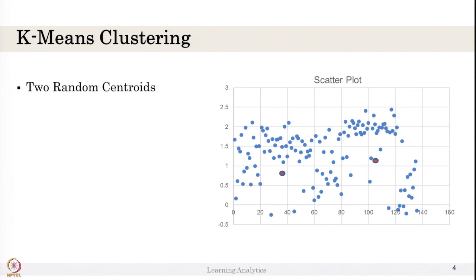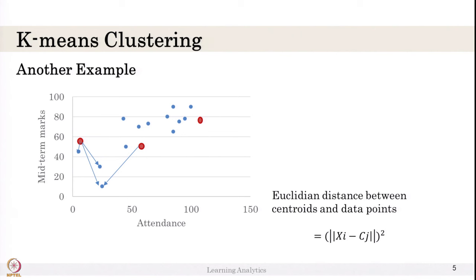Let us see what this distance is and how it is calculated. Consider this data — we have seen this data in previous classes. We have students' attendance and students' midterm marks. We do not know what the end-term mark is. We plotted attendance versus midterm marks in a scatter plot. We would like to cluster them because it is unsupervised learning and we do not know what we are trying to predict.